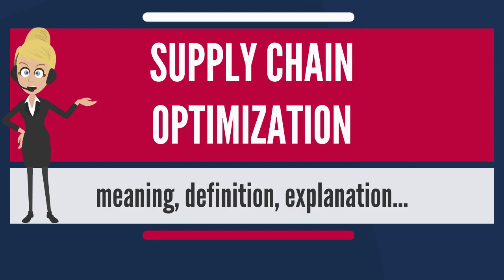Also known as direct shipment, direct plant shipment (DPS) is a method of delivering goods from the plant to the customer directly. At the same time, regional centers, strategically located, provide overnight shipments to the maximum number of customers. This delivery scheme reduces transportation and storage costs.